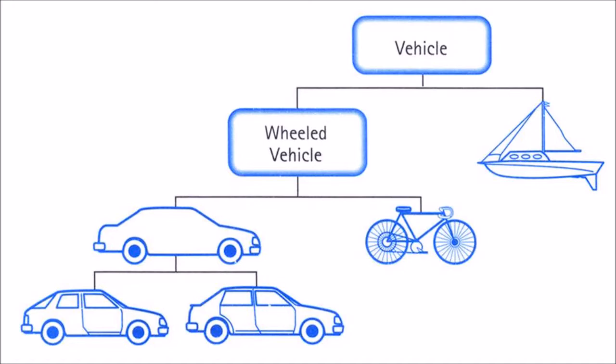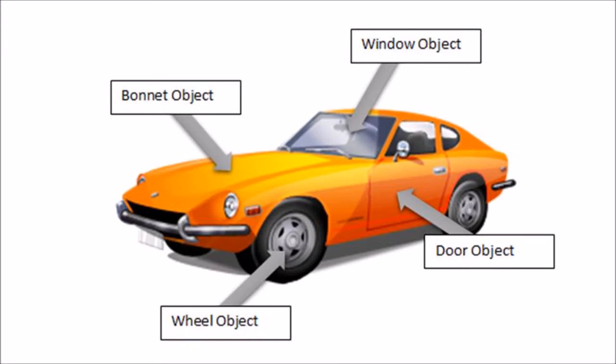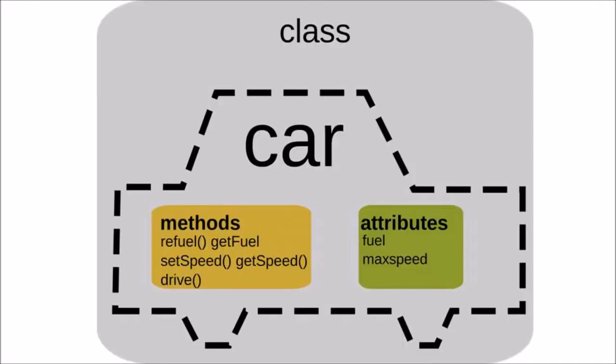For example, let us consider the motor vehicle class. The basic concept or function of a vehicle is transportation. So let us consider motor vehicle as the base class. The fundamental attributes of the vehicle class include engines, doors, machines, brake, clutches, gears, etc. The basic methods or functions used in this class are run, move, or carry.